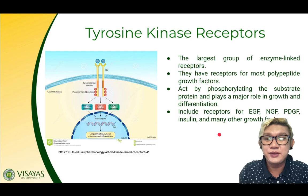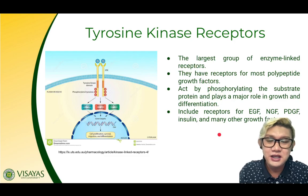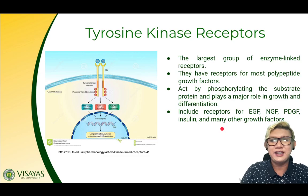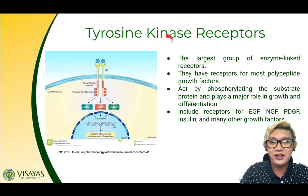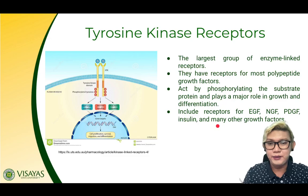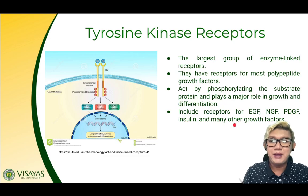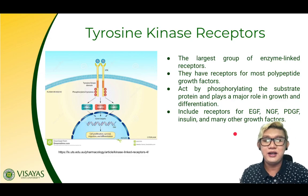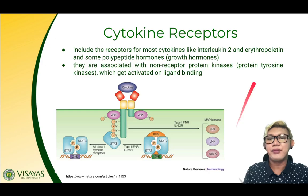Tyrosine kinase receptors are the largest group of enzyme-linked receptors. They have receptors for most polypeptide growth factors, and they act by phosphorylating the substrate protein — that is why they are called kinases. Kinases transfer a phosphate group from one compound to another, and they play a major role in growth and differentiation. These receptors are used for EGF, NGF, PDGF, insulin, and many other growth factors.